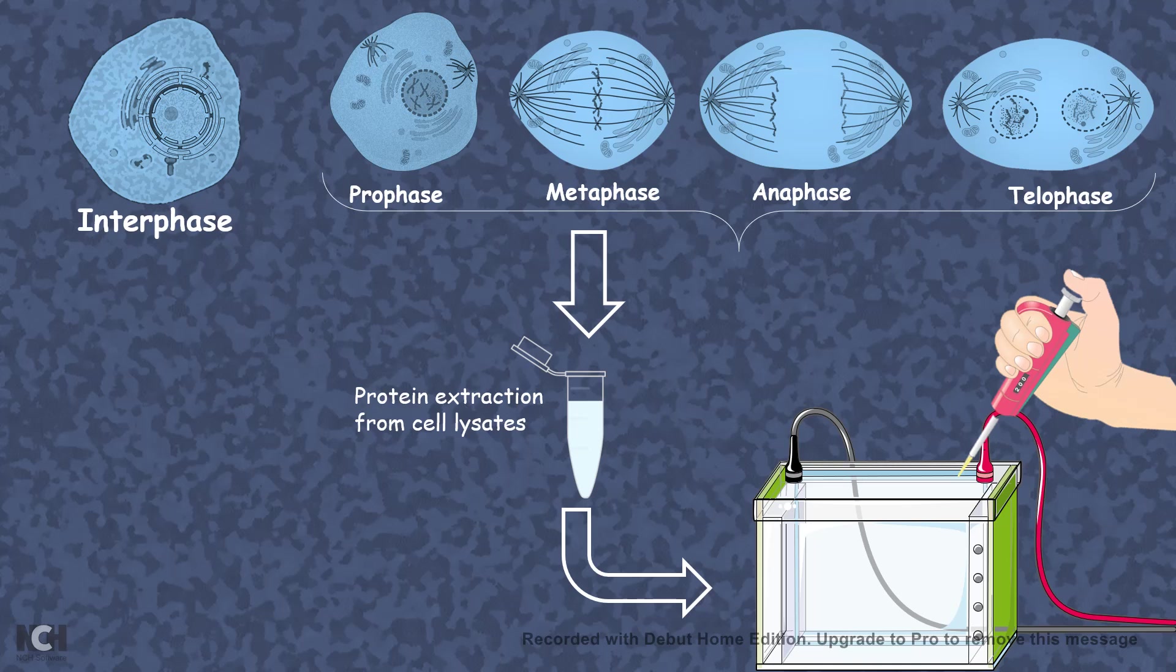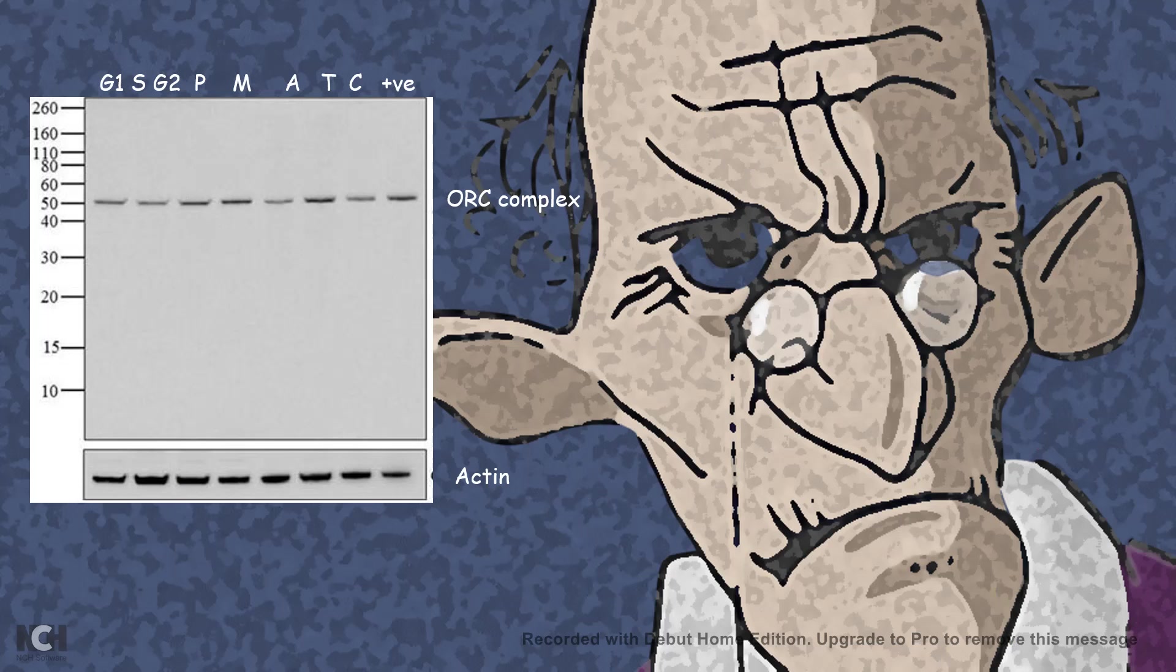They thought that only one particular phase, the S phase, would have the expression of the origin of replication. But it turns out that at every phase that they collected samples from, have these ORC complex. And this was pretty confusing to them at that moment. It took at least 40 years to understand that.